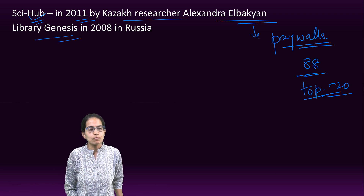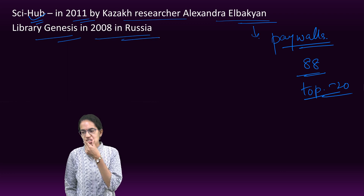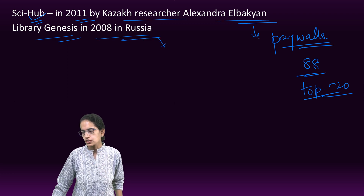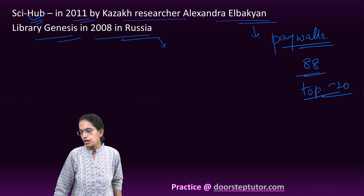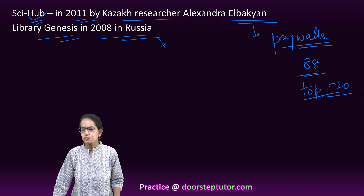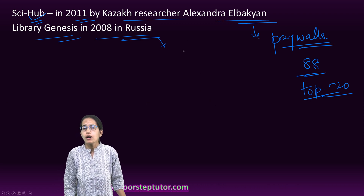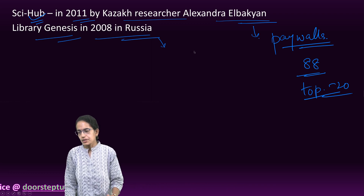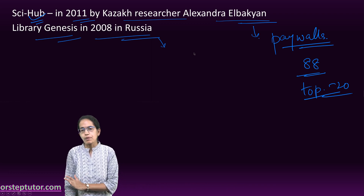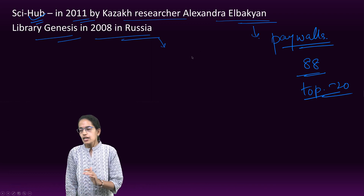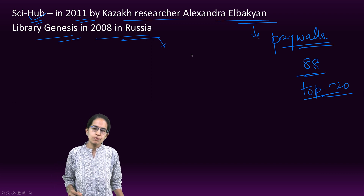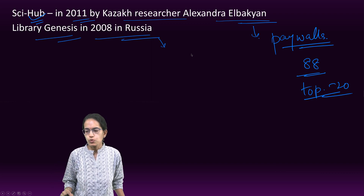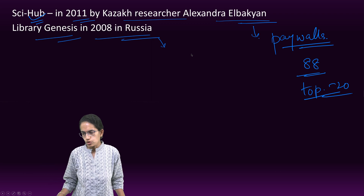Similarly, Library Genesis, founded in 2008 in Russia, is another search portal where content has been brought onto the platform, known as the Pirate Library Mirror. This was challenged by publishers' associations and the Authors Guild, and later Z Library was closed down in 2022.